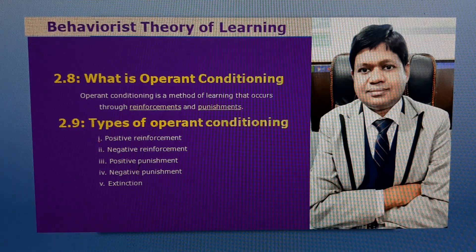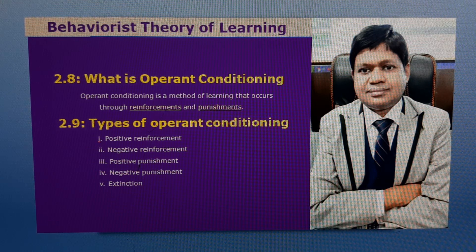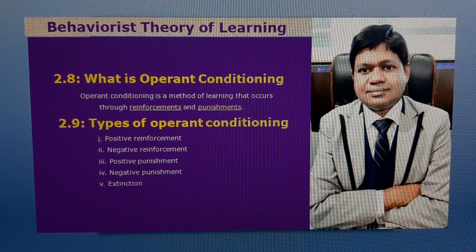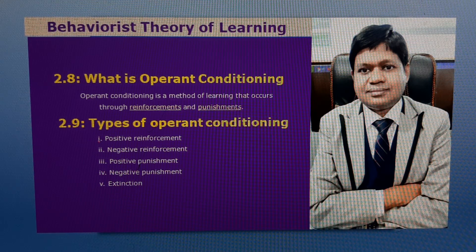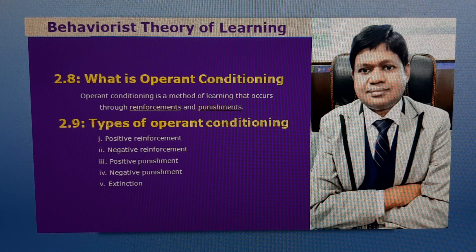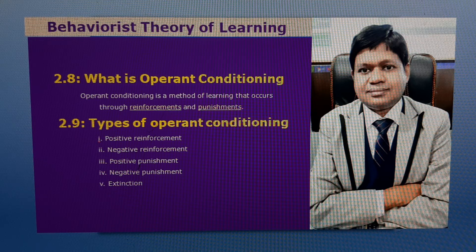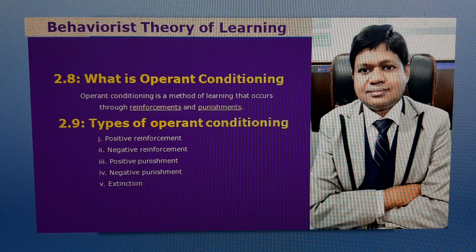Operant conditioning is a method of learning that occurs through reinforcements and punishments. Through operant conditioning, an association is made between a behaviour and a consequence for that behaviour. It is also known as the ABCs of behaviour, where A stands for antecedent, B stands for behaviour, and C is for consequence. For example, when we feel a headache, we take medicine and get relief. Here, feeling headache is the antecedent, taking medicine is the behaviour, and getting relief is the consequence.